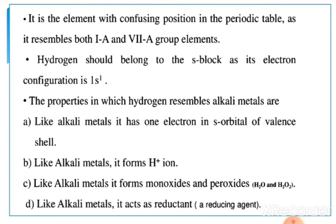Hydrogen has a confusing position in the periodic table, as it resembles both group 1A and group 17A elements. It belongs to the S-block with electronic configuration 1S1. Properties in which hydrogen resembles alkali metals: like alkali metals, it has one electron in the S orbital of the valence shell; it forms H+ ion; it forms monoxide and peroxide (H2O and H2O2); and it acts as a reductant.